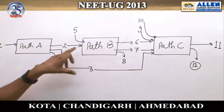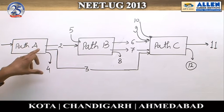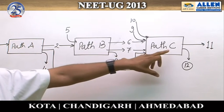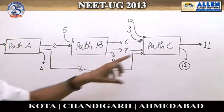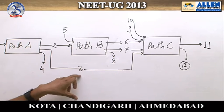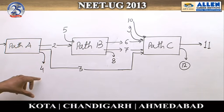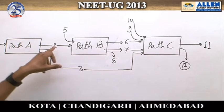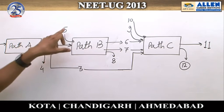Product number two is actually the reactant of path B, so it should be pyruvic acid. Product number three takes part in path C — it is one of the NADH produced. The net product number four is ATP. Pyruvic acid then enters into path B.